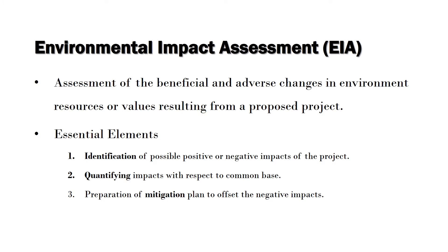In EIA, we have a proposed project. That project will result in beneficial and adverse changes in our environment. If you want to make an assessment, we will be able to use EIA. There are three elements in EIA: what is positive or negative — the identification is an element. We also need to quantify the impacts, so quantification is an essential element. And finally, we need to make an assessment as part of the environmental impact assessment study.